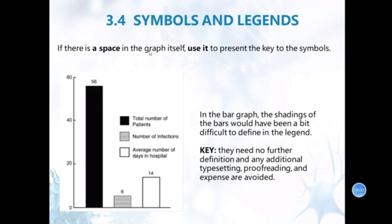If there is space in the graph itself, use it to present the key to the symbols. It's also a rule. Like in the bar graph, the shading of the bars would be a bit difficult to define in the legend. Like the shading is difficult to define. You can define here. Key is, they need no further definition and any additional typesetting, proofreading and expense are avoided. In this space, you can provide a lot of information. If you can, just provide the information here. That will be good. And also pay attention, if like the number is 56, this top index number is 60 is enough. Do not put 100 here.